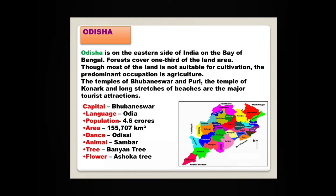Orissa is on the eastern side of India on the Bay of Bengal. Forests cover one-third of the land area. Though most of the land is not suitable for cultivation, the predominant occupation is agriculture. The temples of Bhubaneswar and Puri, the temple of Konarak, and the long stretches of beaches are the major tourist attractions. The capital of Orissa is Bhubaneswar. The animal mostly found here is the Sambar, again a kind of deer.